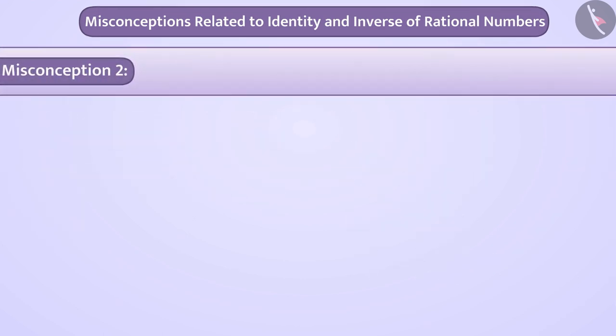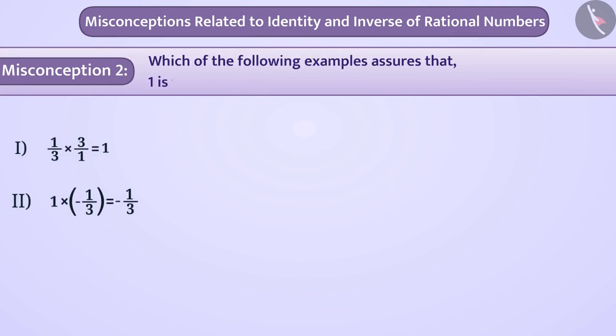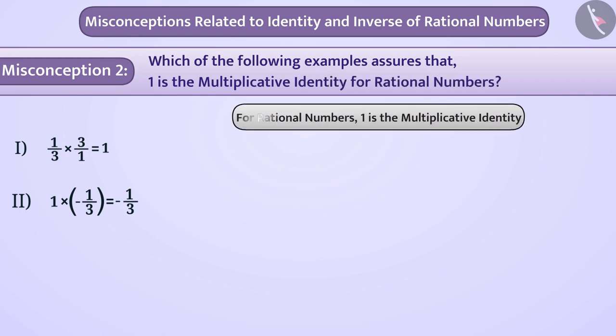Misconception 2: Which of the following examples assures that 1 is the multiplicative identity of rational numbers? For rational numbers, 1 is the multiplicative identity.